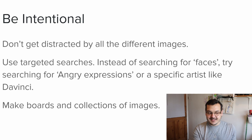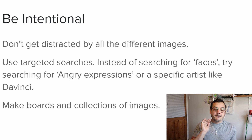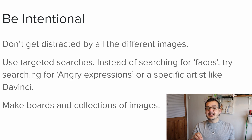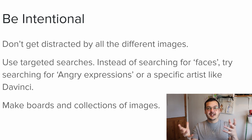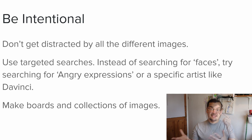When we're searching for images, we should be targeting what we're doing. Instead of searching for "faces," try searching for "angry expressions," or for a specific artist like DaVinci or Dali. Make boards and collections of images based on a subject you're wanting to work on. You can even make sub-boards within those boards. For instance, if you're working on DaVinci and want to look at his sketches and paintings, you can have those in two separate boards on Pinterest.